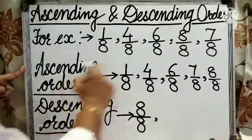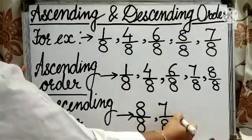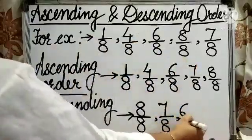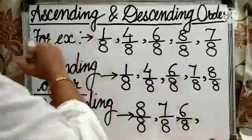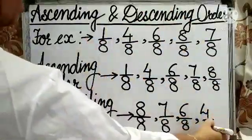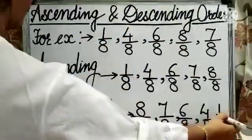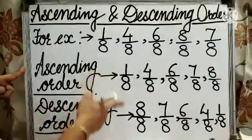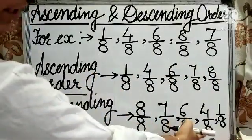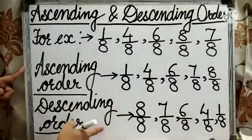After 8 by 8, 7 by 8 will be the greatest fraction. Then 6 by 8, after 6 by 8, 4 by 8 and at last 1 by 8 will come. Here we have arranged these fractions from the greatest to smallest order, so this order will be known as descending order.